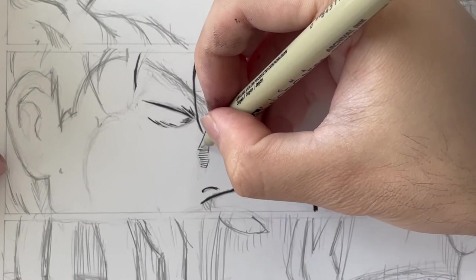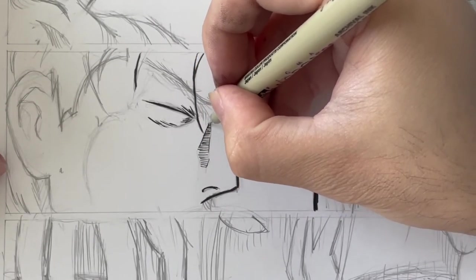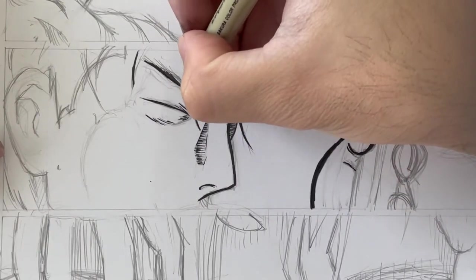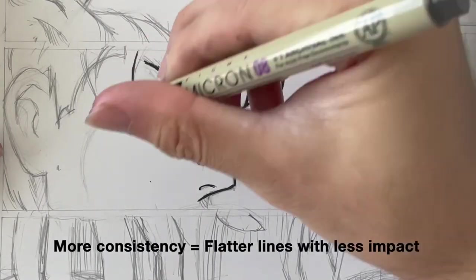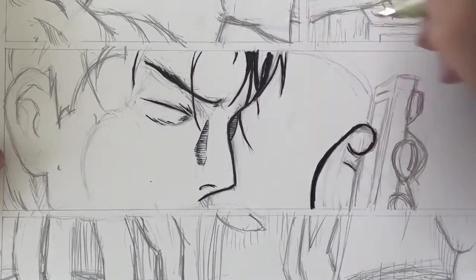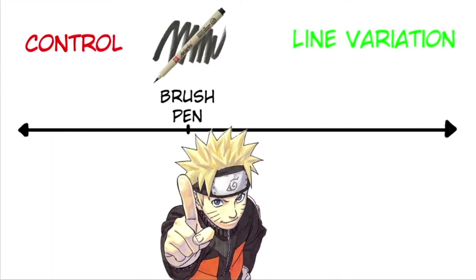Technical pens are great for hatching consistent thickness to reach a specific density in value. The main disadvantage of technical pens is that because the lines are less varied there's less impact or a certain je ne sais quoi.